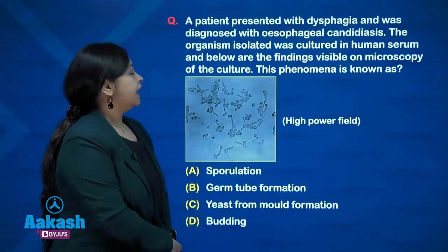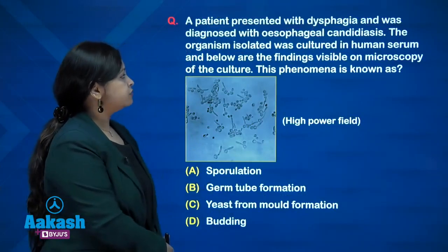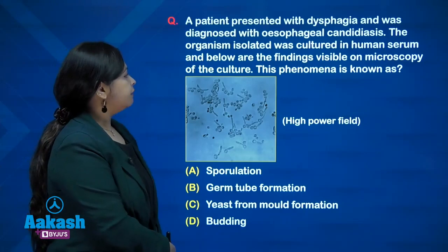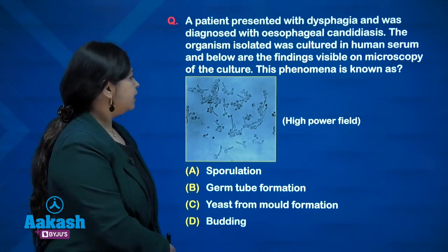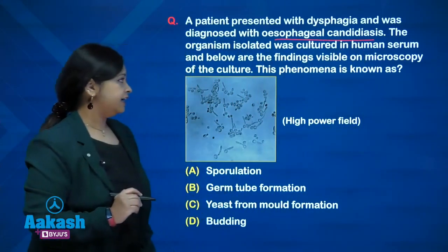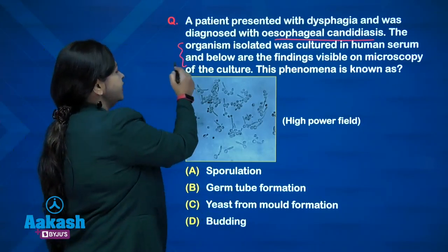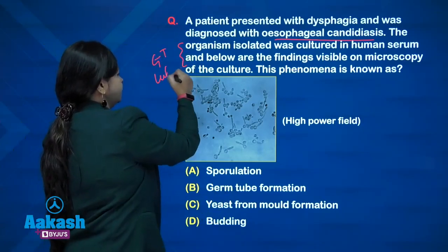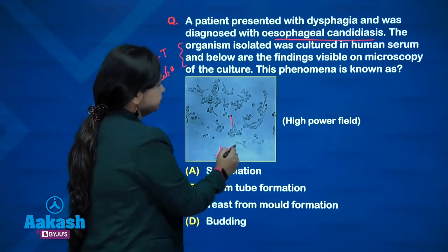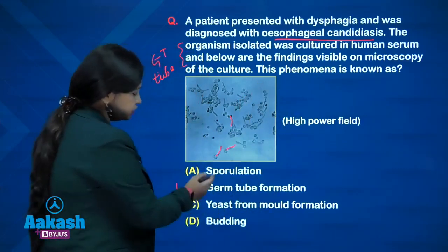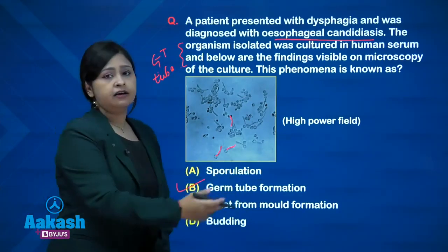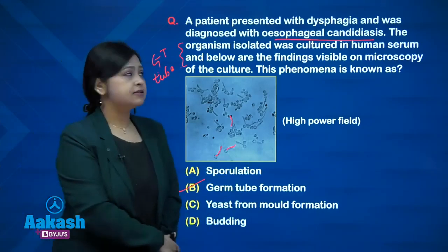Coming to another question: a patient presented with dysphagia and was diagnosed with esophageal candidiasis. The organism isolated was cultured in human serum and the microscopy findings show the production of germ tubes. This phenomenon is known as germ tube formation, also called Reynolds-Broad phenomenon. This is an easy image-based question — you should be able to answer this.